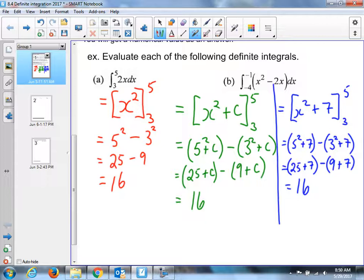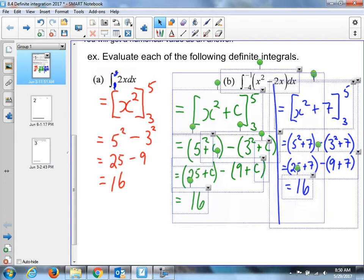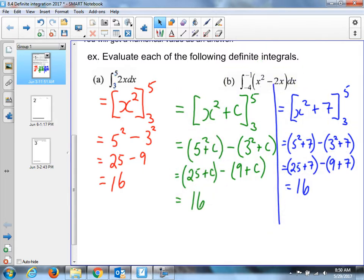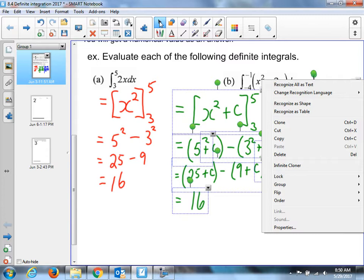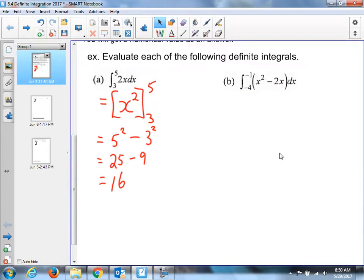This is minus C here. And C minus C, it's still 16. What about this? I could add 25 plus 7, 32, isn't it? Minus 16. 32 minus 16 is 16. The 7's cancel each other out.